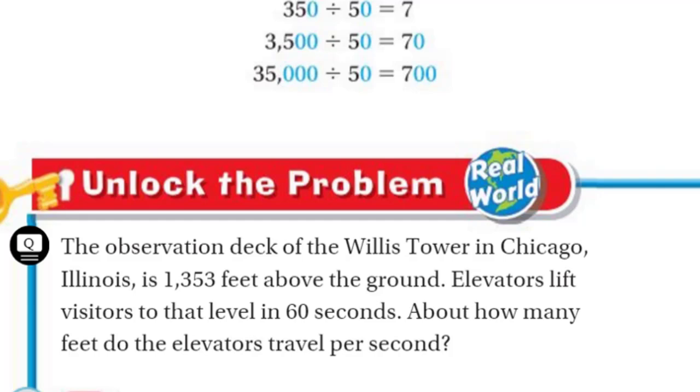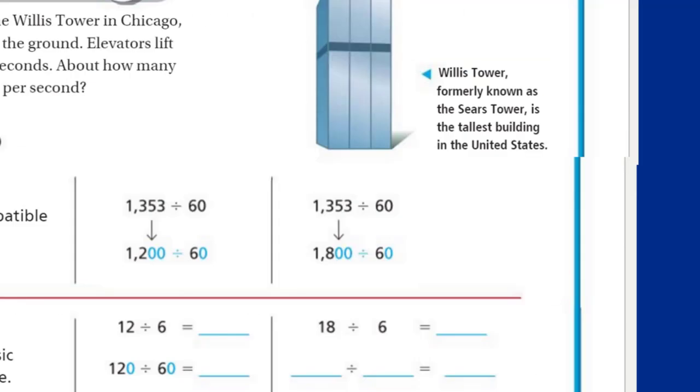That's right, my friends, because it's real world. It says here, the observation deck of the Willis Tower in Chicago, Illinois, is 1,353 feet above the ground. Wow. It says elevators lift visitors to that level in 60 seconds. Are you serious? Talking about going supersonic speed. It says about how many feet do the elevators travel per second? Key word there, about. It says here that Willis Tower, formerly known as the Sears Tower, is the tallest building in the United States. That's what I love about this real world.